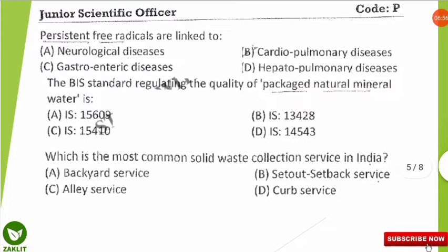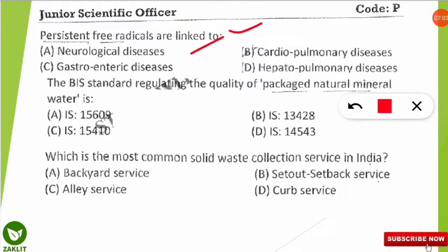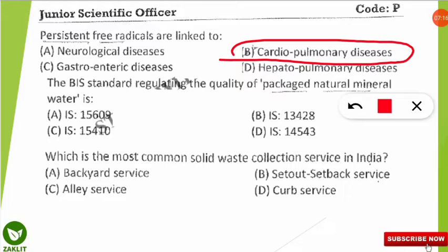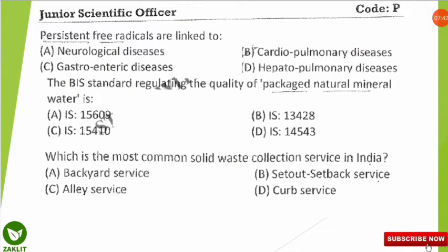The next question is from air pollution: persistent free radicals are linked to which disease — neurological, cardiopulmonary, gastroenteric, or hepatopulmonary? The correct option is B — cardiopulmonary disease. Persistent free radicals are pollutants that are long-lived in fine particulate matter, such as PM2.5. They stick to these particles and persist in the atmosphere, causing air quality damage and diseases such as cardiopulmonary disease.